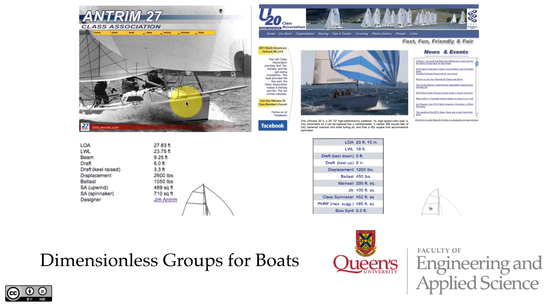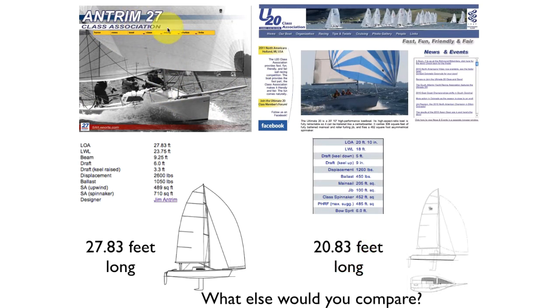These two sailboats look a lot alike. This is the Antrim 27 and this is the Ultimate 20. It's not surprising they look similar because Jim Antrim, who designed this boat, also designed this boat.